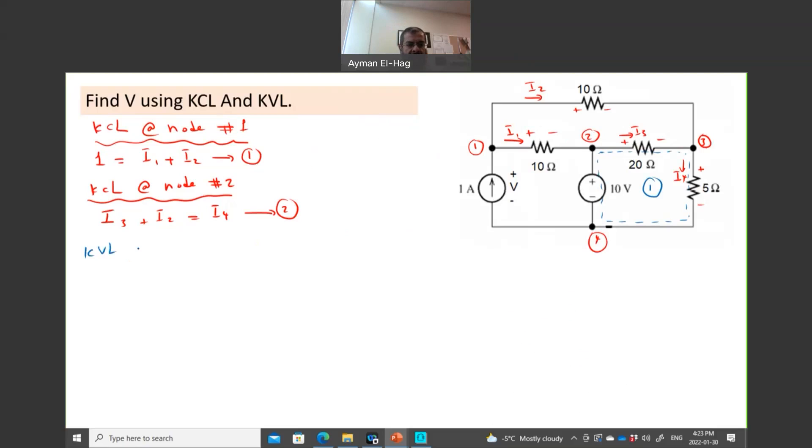So we'll apply KVL to loop number one. We'll take our nice trip around the field. We'll have 20 times I3 with a plus sign, so 20I3 plus 5I4 minus 10 equal to zero. I will divide by five just to reduce the numbers in the equation, make it easy to deal with.